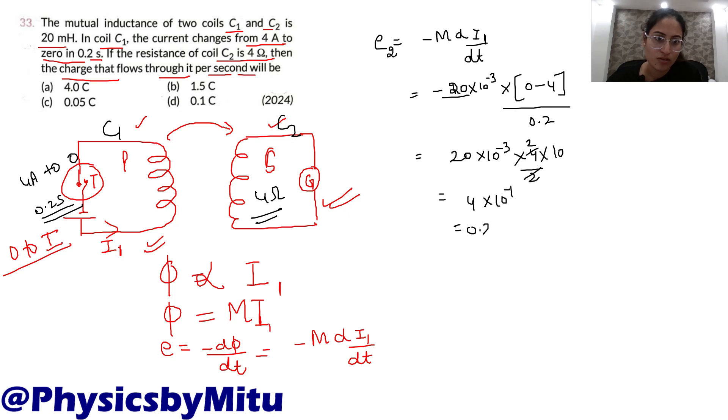Now, what will be the current in the second coil? i2 will be e2 upon R. By Ohm's law, i2, current in the second coil, will be e2 upon R: 0.4 upon 4. What is the resistance of second coil? 4. So this is 0.1 ampere.